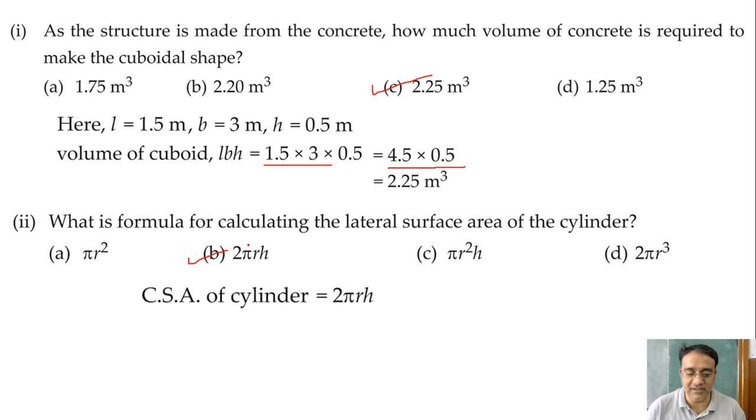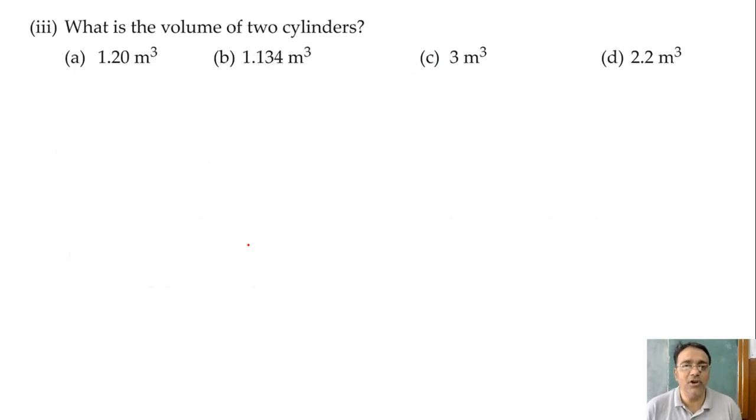So now we are moving towards the third question. What is the volume of two cylinders? So formula for volume of cylinder is πR²H. Right. So two cylinders means you have to multiply with two. So 2 into πR²H.